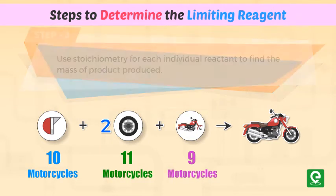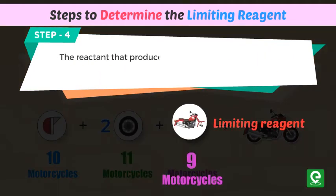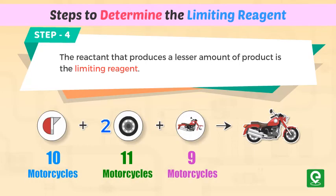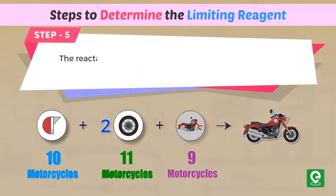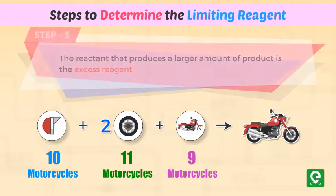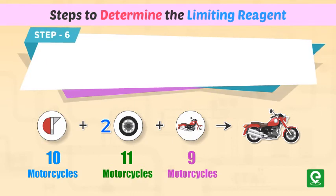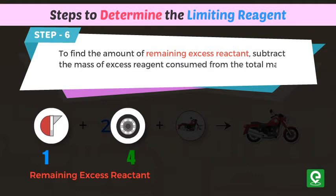Step four: the reactant that produces a lesser amount of product is the limiting reagent. Step five: the reactant that produces a larger amount of product is the excess reagent. Step six: to find the amount of remaining excess reactant, subtract the mass of excess reagent consumed from the total mass of excess reagent given.